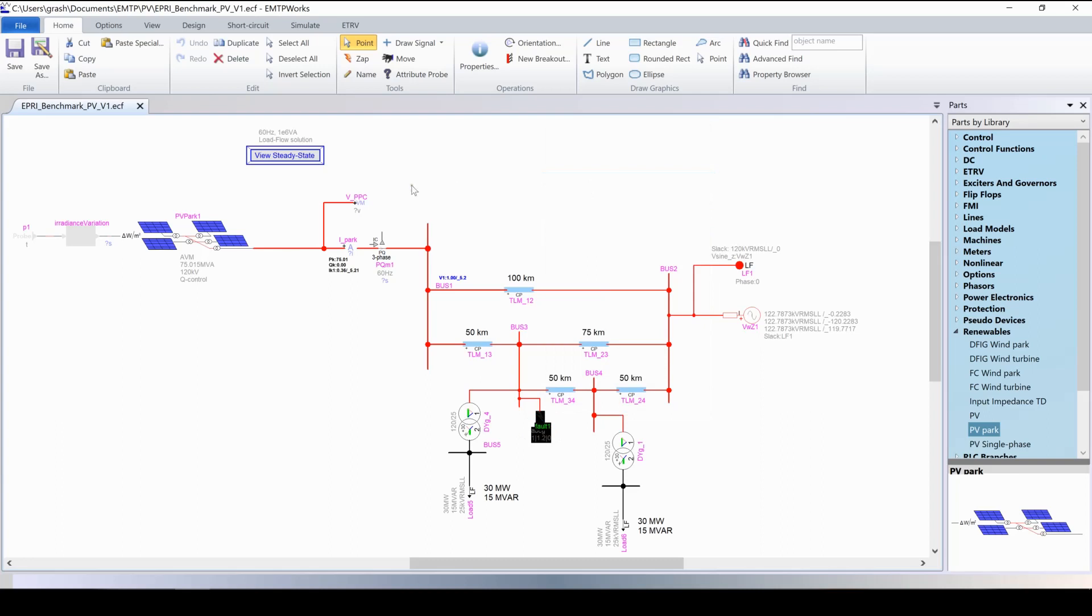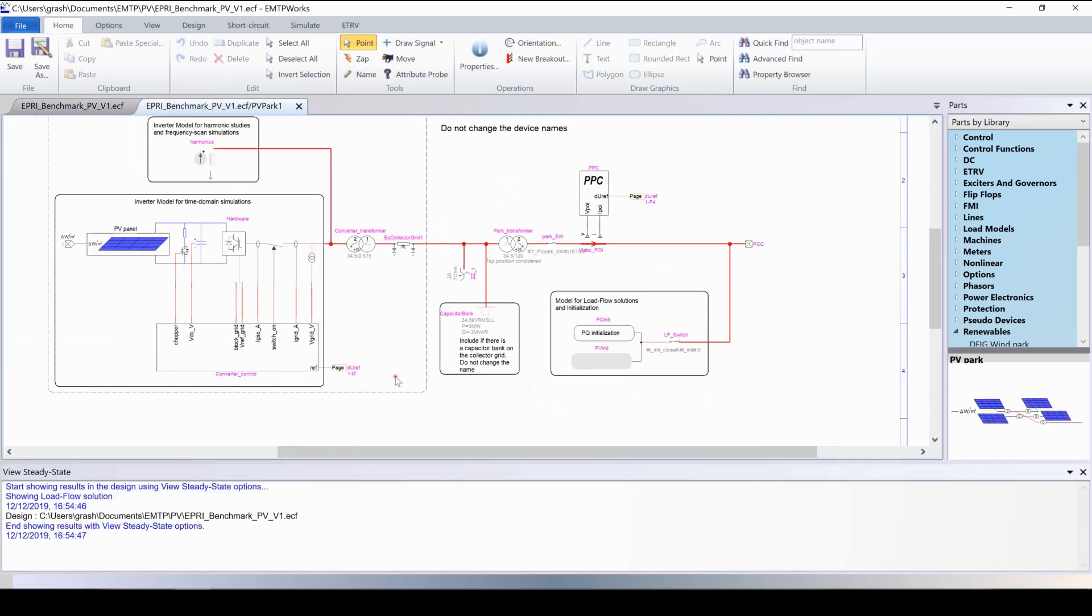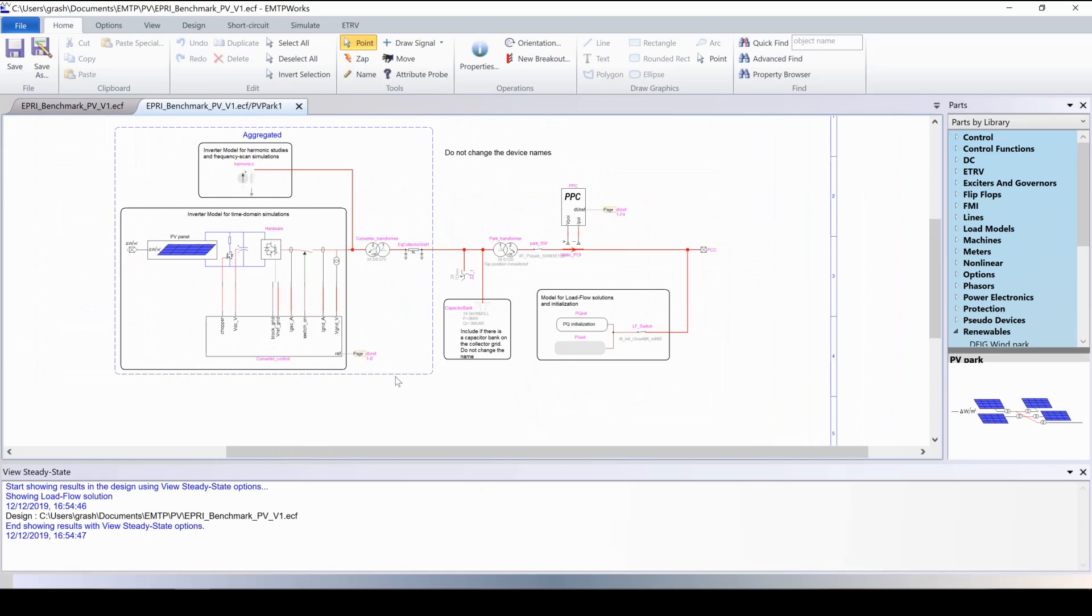Let's quickly take a look at the park control. This device is the aggregated version of the park controller, where all the converters are aggregated into one. This model has been described in more detail in the first video of this series. The point of command coupling inside the sub-circuit is here. You can see here the power plant controller, which delivers the voltage deviation reference to the aggregated converter.